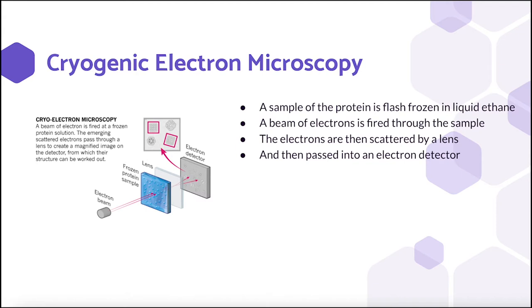Then, a beam of electrons passed through the sample and a lens into an electron detector creates multiple 2D images of the protein particles trapped in the ice from each of many various angles.